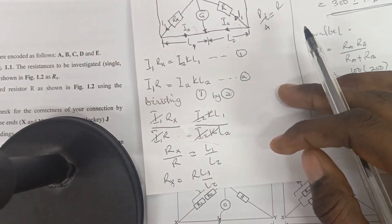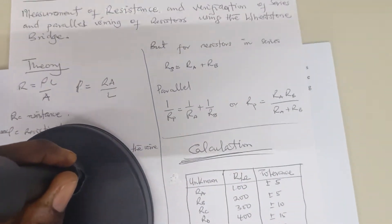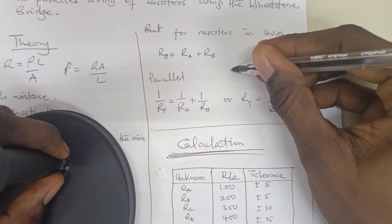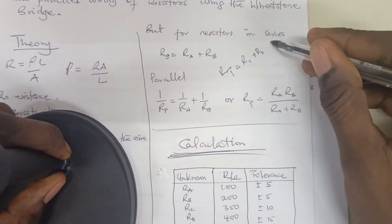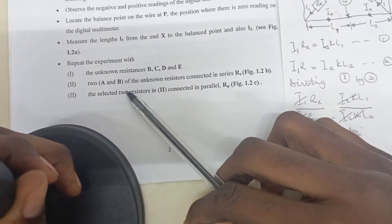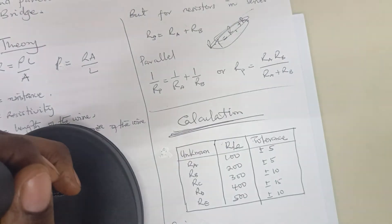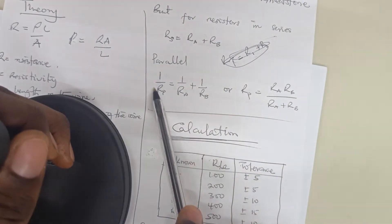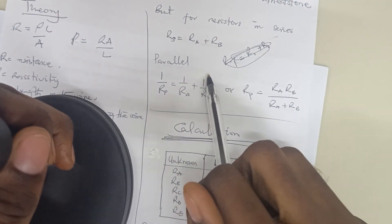Continuing from here: we know that for resistors in series, we just add them. For example, if it's R1 and R2, Rt should be equal to R1 plus R2. In our table they were labeled A, B, C, D, E instead of 1, 2, 3 — that's why we are using A and B. So resistance in series, you just add them.